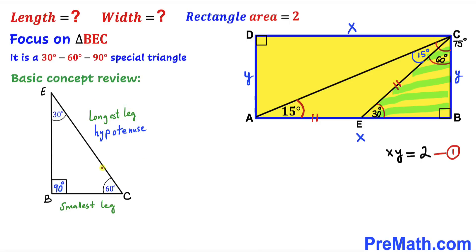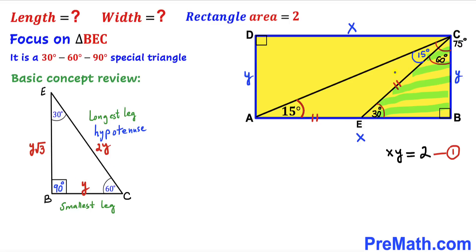In a special 30-60-90 triangle, the hypotenuse is always twice the smallest leg. If the smallest leg is 1 unit, the hypotenuse is 2 and the remaining leg is √3. In general, if the smallest leg is y, then the hypotenuse is 2y and the other leg is y√3.